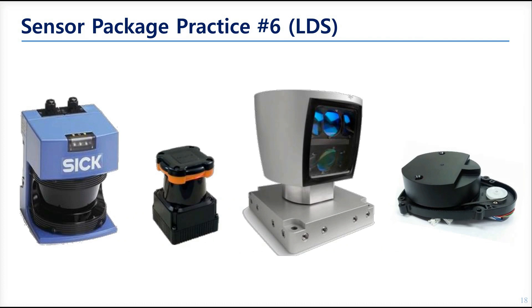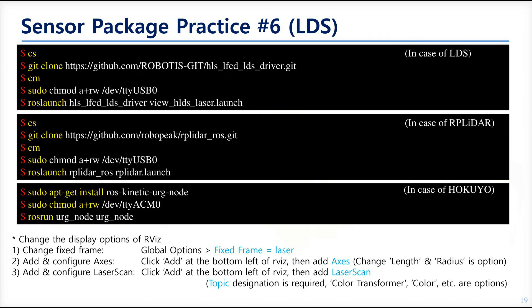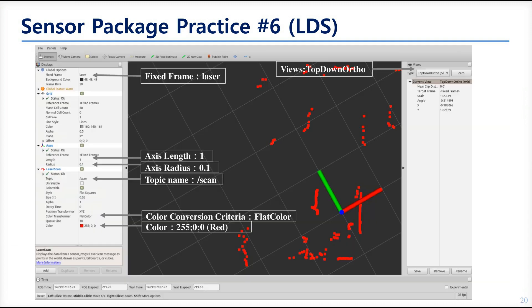The next packages are for the LiDARs. The following are for the LDS from LG Hitachi, the RP LiDAR, and the LiDAR from HOKUYO. Using the LDS for instance, you will get this green scan result when you set the options as shown in the image. These options — especially the axis, length, and radius — are for showing the scan result as similar to the real space as possible.